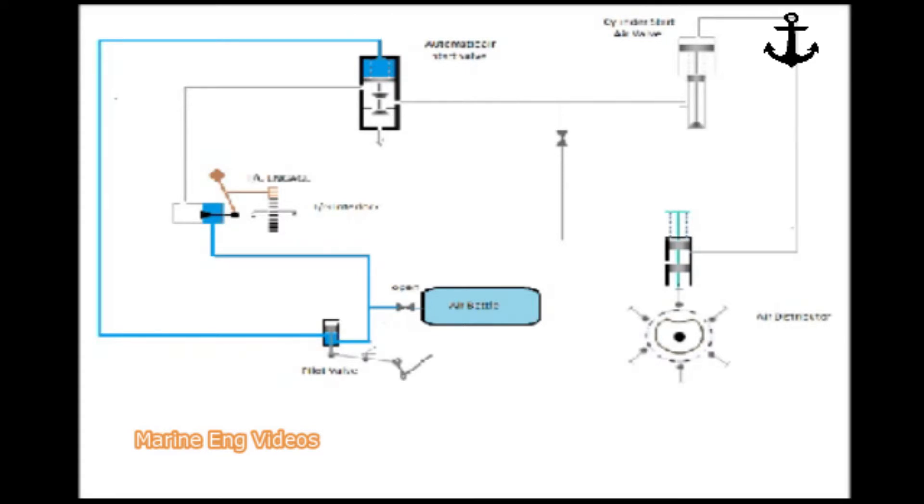The other branch supplies air until the turning gear interlock which prevents the air from going further in the line.